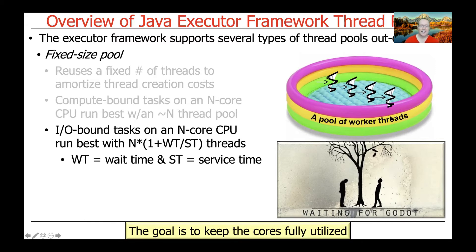The formula is: N × (1 + WT/ST), where N is the number of cores, WT is wait time — the amount of time the system will be waiting for I/O to complete — and ST is service time — the time to do computations once the I/O has been received. If WT is high relative to ST, the ratio is larger than one, meaning you need more threads to get good performance.